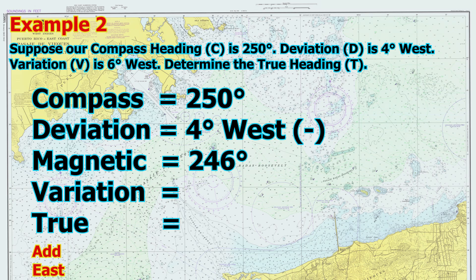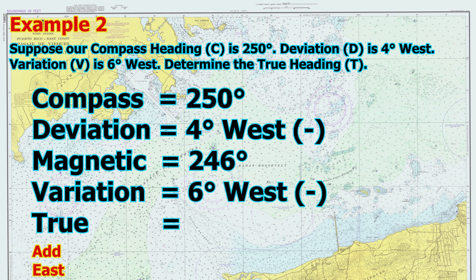Step 2, apply variation: magnetic 246 minus 6 west equals true 240. So the true heading is 240 degrees.